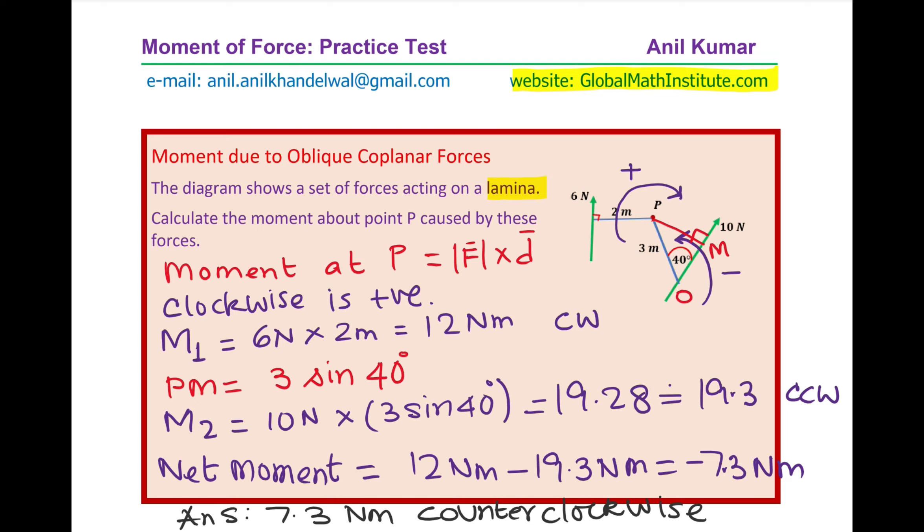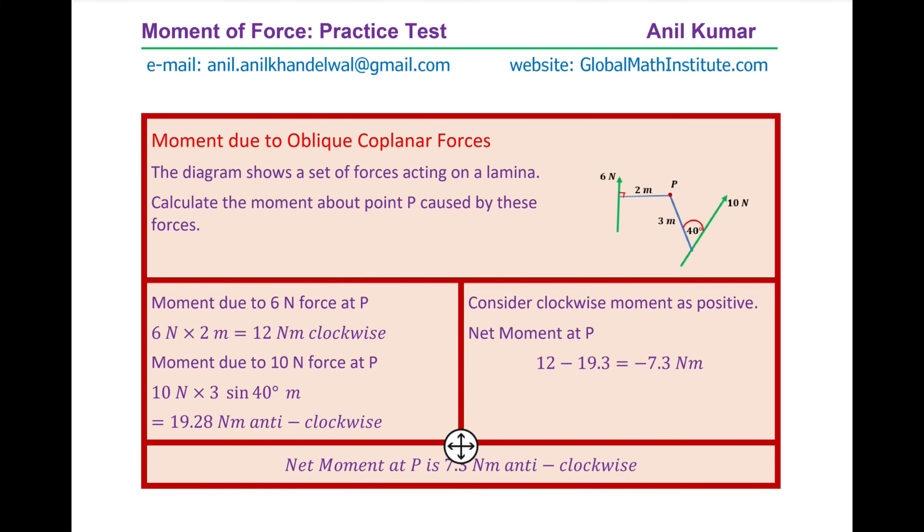It is important to write down the rotation. I hope the concept is absolutely clear. Here is the complete solution in short as we did. 6 Newton, the distance given is the shortest distance, so we just directly multiplied 6 Newton by 2 meters getting the positive clockwise moment at P.